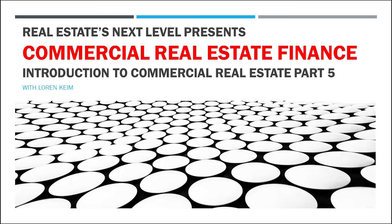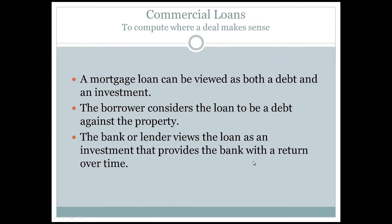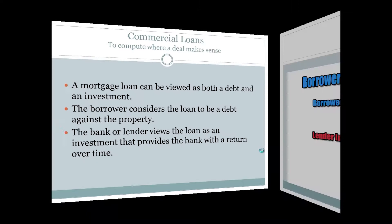And that affects value. There are a few areas I want to highlight. First, a mortgage loan can be viewed as both a debt and an investment. A lot of agents have trouble with this concept. It could be a debt or an investment depending on how a loan is viewed. The borrower considers a loan to be a debt against the property, something they want to pay off. The lender, on the other hand, views the loan as an investment — they've invested in the property and in the borrower with a fixed return over time. There are two investments in every loan against a property.